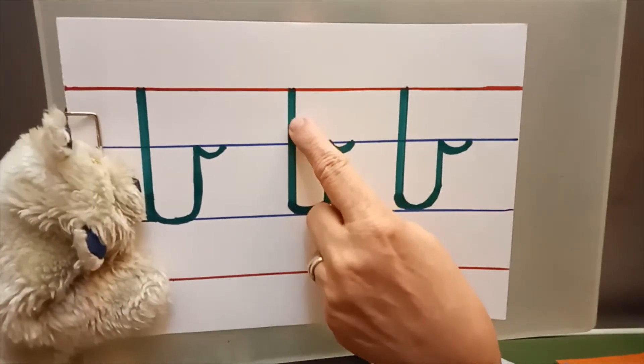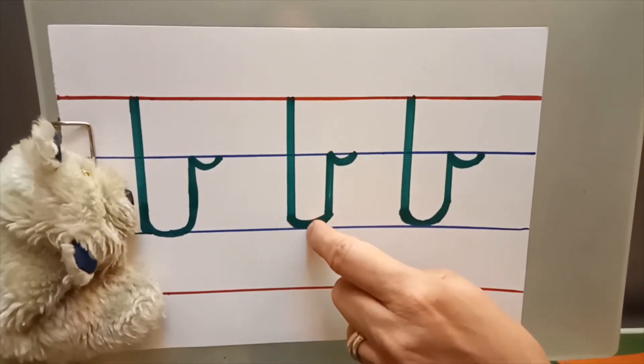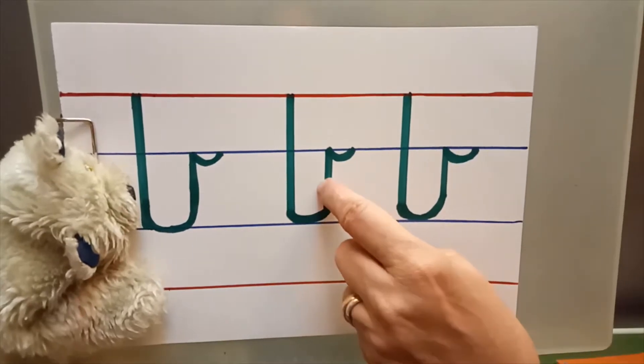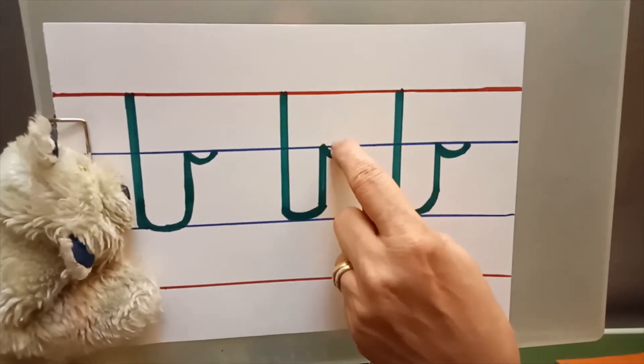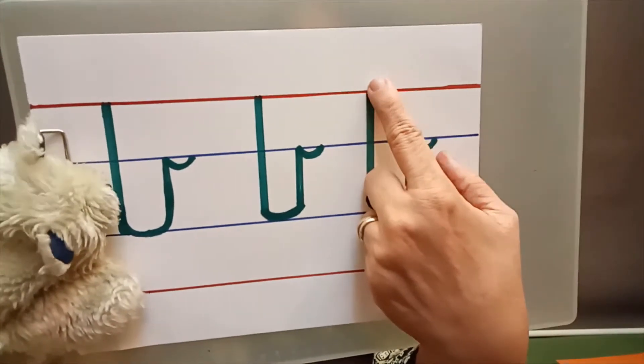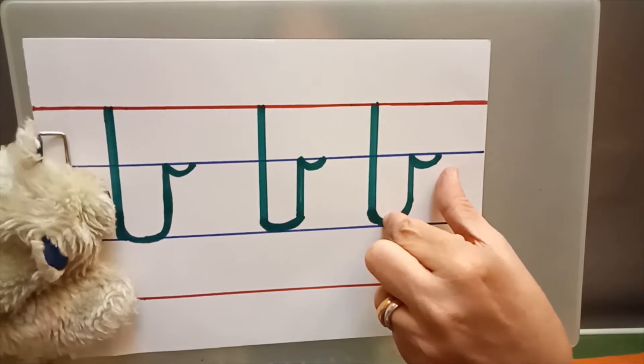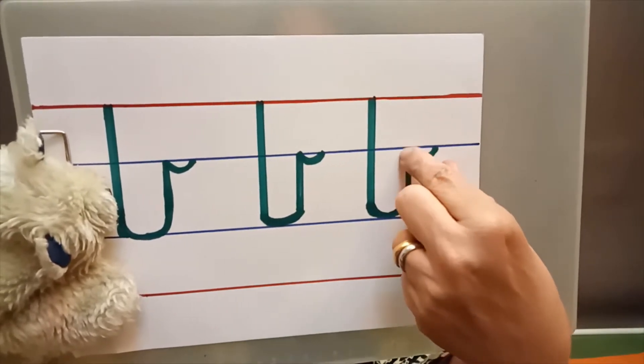Small b, again we make a standing line, come down to the blue line, then like l we turn, then go up again to the blue line and jump. So very easy. Last time, come on, standing line, come down, turn, go up to the blue line and jump. Yes, easy, it's very easy.